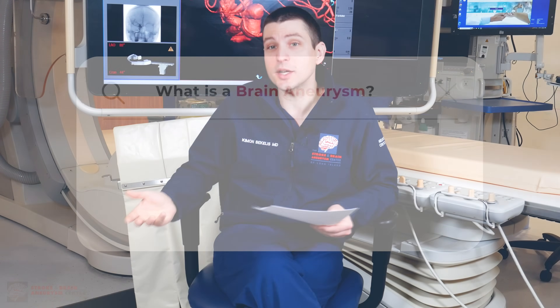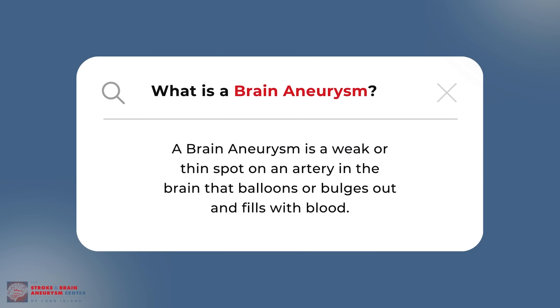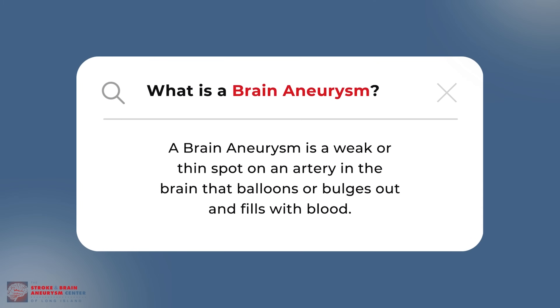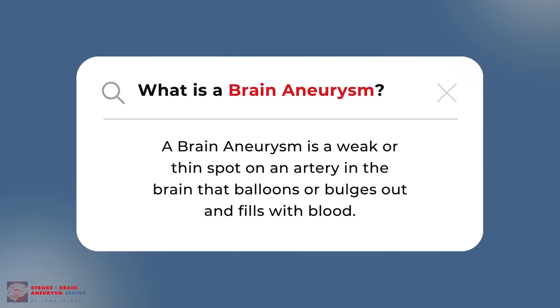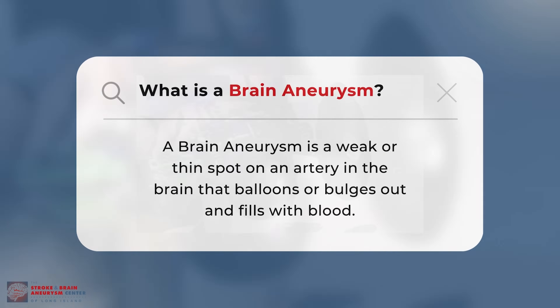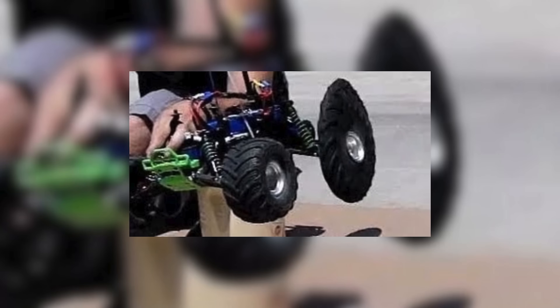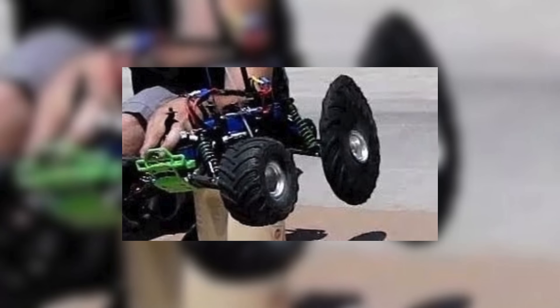Another common question is: what is a brain aneurysm? A brain aneurysm is like a balloon on the side of a blood vessel — very much like if you had a car tire with a soft spot, you'd have a little ballooning happening.